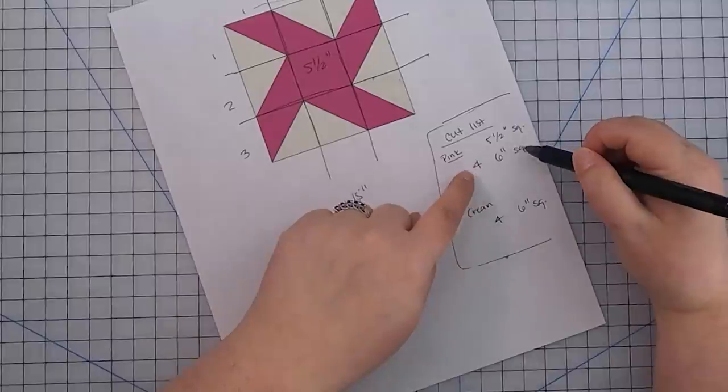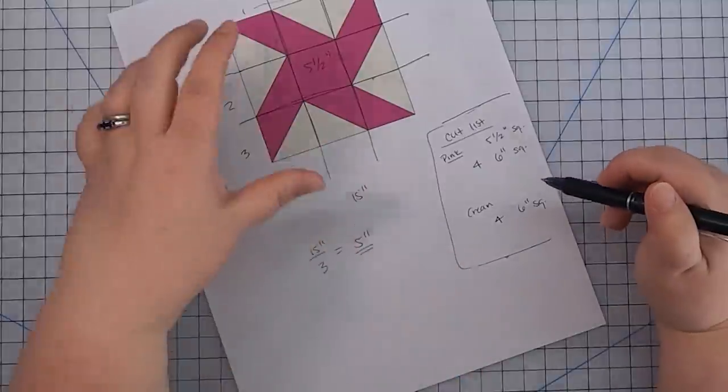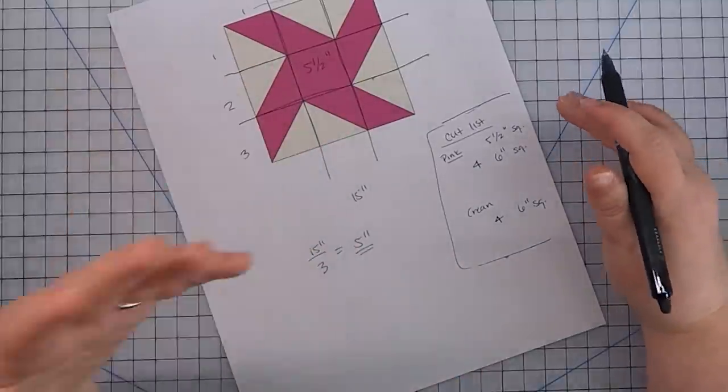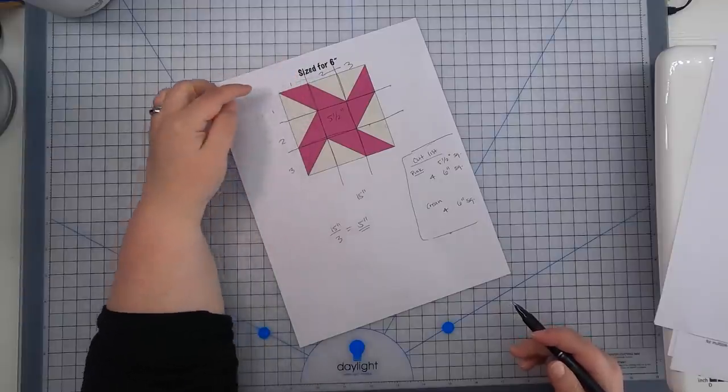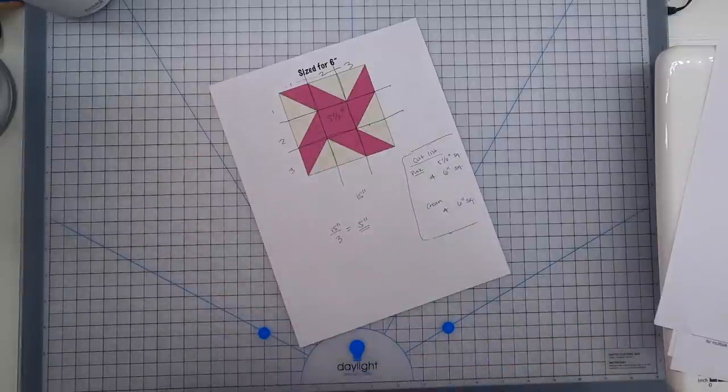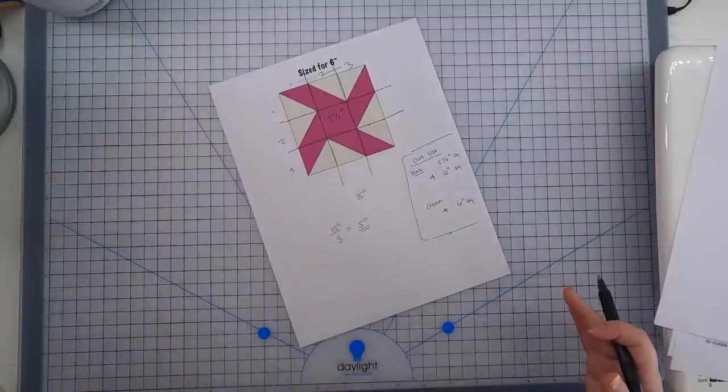And I'm going to need the same thing in cream. Four six inch squares of cream. And that's all we need for our cut list. Now we can cut according to our measurements that will yield a 15 inch block and follow the steps in the tutorial that you found. The assembly is going to go together the exact same way. You're going to make half square triangles the same way. They're just going to be a different size now so that instead of a six inch block where you're making little tiny two inch half square triangles, you're going to be making five inch half square triangles. And follow the steps in the tutorial and you'll have a 15 inch block.